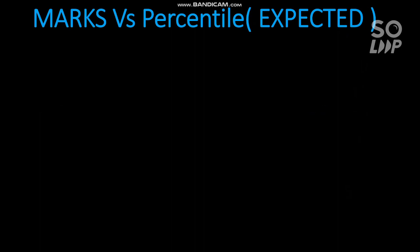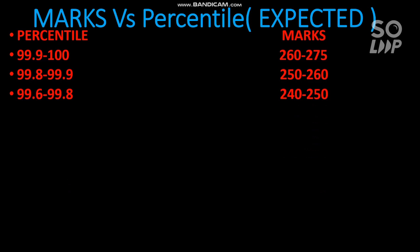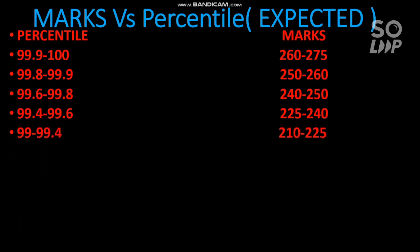Now I will talk about the marks versus percentile expected for the third and fourth attempt of JEE Mains. For 99.9 to 100 percentile, you need to score at least 260 to 275 marks depending on paper difficulty — it might vary by 5 to 10 marks. If the paper is very hard, you can get 99.9 percentile at 255 or 250. I am considering the paper easy to moderate. For 99.8 to 99.9 percentile, you need 250 to 260 marks. For 99.6 to 99.8, you need 240 to 250 marks. For 99.4 to 99.6, you need 225 to 240 marks.